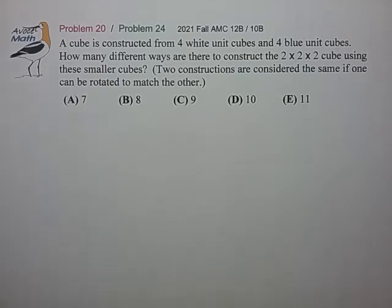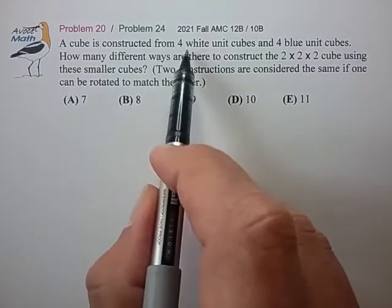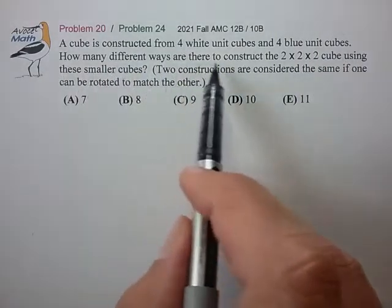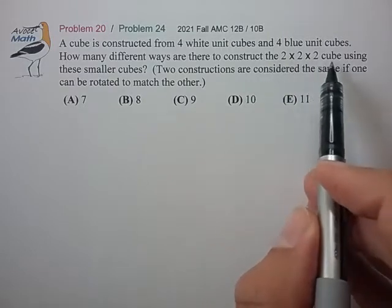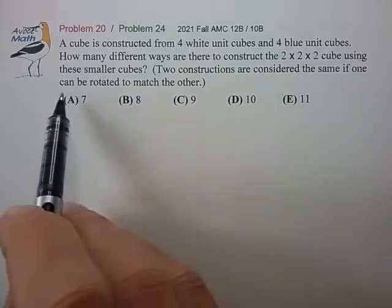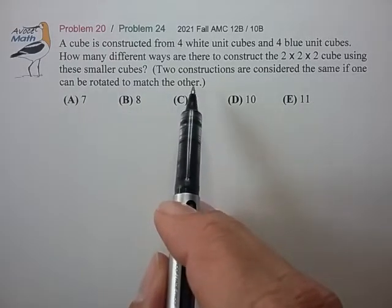Hi, this is problem 20 from the 2021 AMC 12B. A cube is constructed from four white unit cubes and four blue unit cubes. How many different ways are there to construct the 2x2x2 cube using these smaller cubes? Two constructions are considered the same if one can be rotated to match the other.